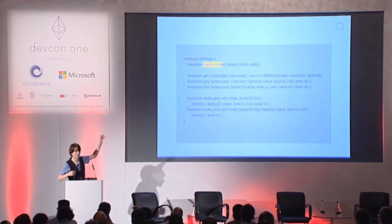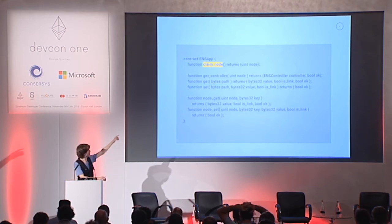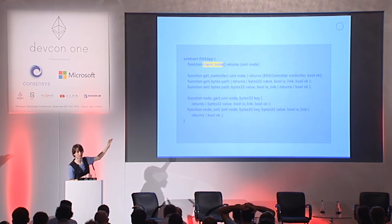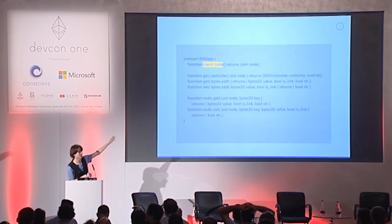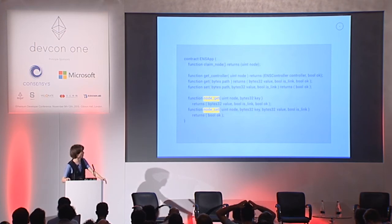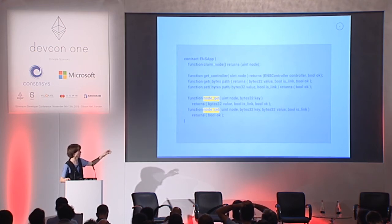Claim node you'll only be working with if you're writing a controller contract. Controller contracts call this function — the ENS app sets the controller contract making the call to be the controller for the node it sets aside in the tree, and then it returns that node's ID. The controller contract can then build out the subtree however it wants, and it can set the path for that subtree in the ENS tree using the set function. It passes in the desired path, the ID of the node as a value, and sets the isLink boolean to true.